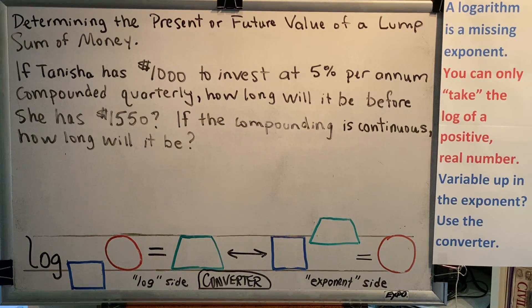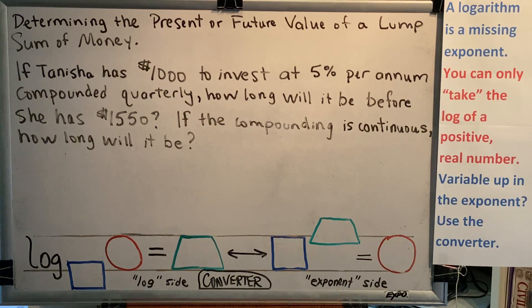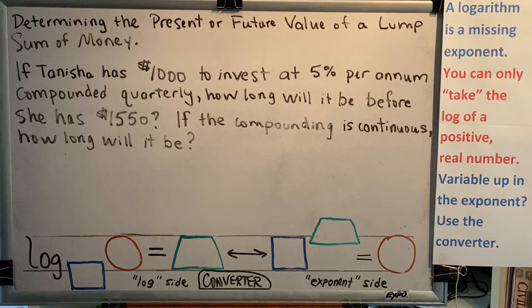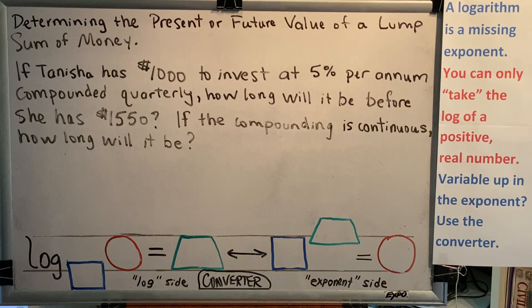The topic of this video is determining the present or future value of a lump sum of money. Let's look at a problem. If Tanisha has $1,000 to invest at 5% per annum compounded quarterly, how long will it be before she has $1,550? If the compounding is continuous, how long will it be?